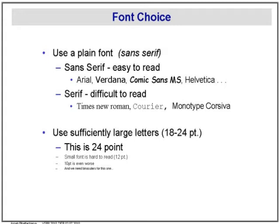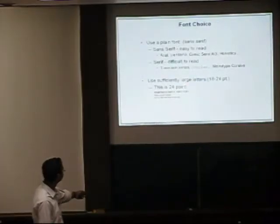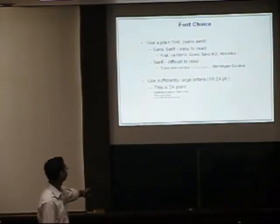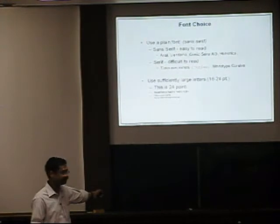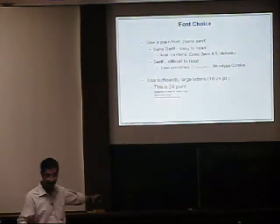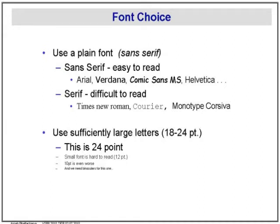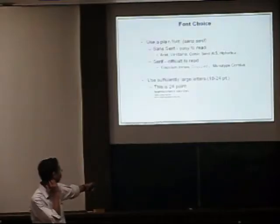Depending on the mood — if it's a very light thing, it might be something like Comic Sans. But there are some fonts that are difficult to read. They're okay for books. But Times New Roman, which is the standard default font in Windows, is not a good thing when you have just a little bit of text to read. Courier, which is a typewriter font, is okay for lines of code, but otherwise it's not okay.